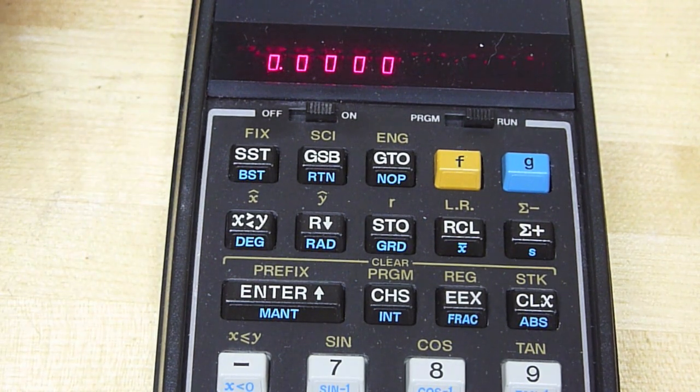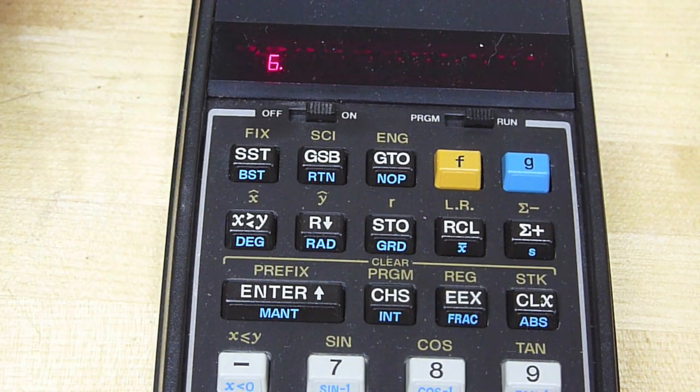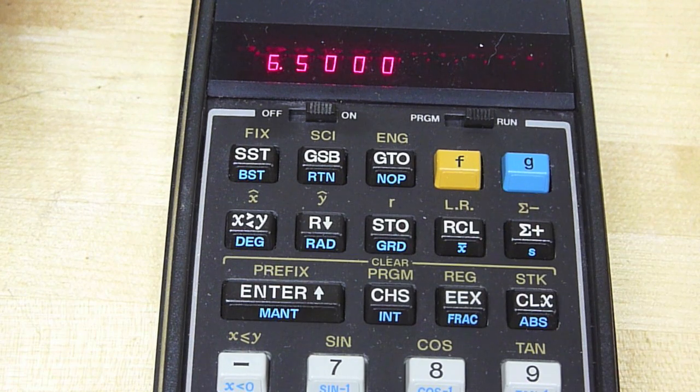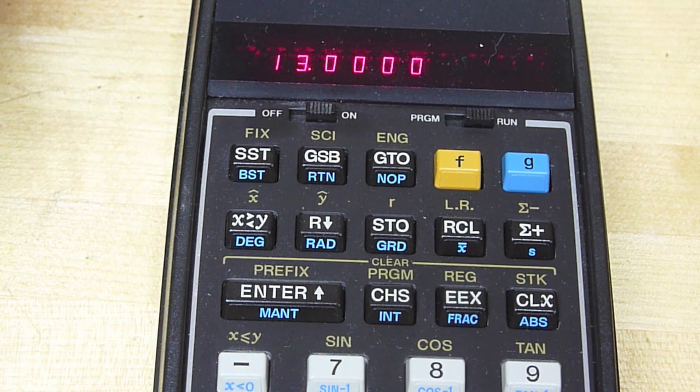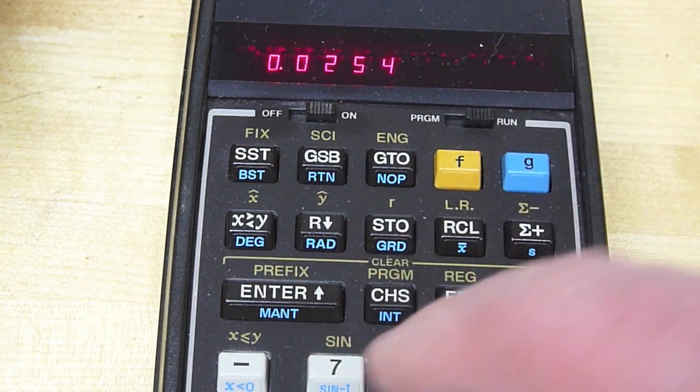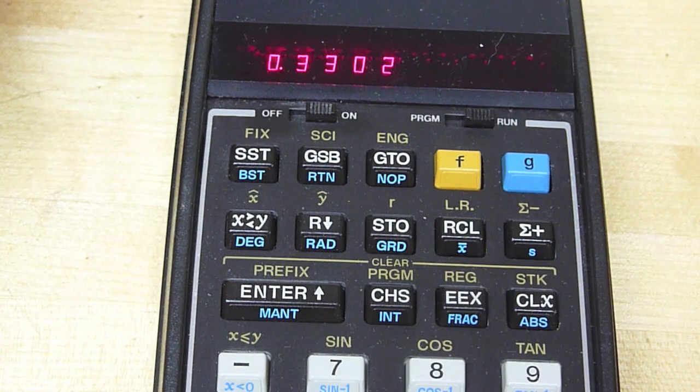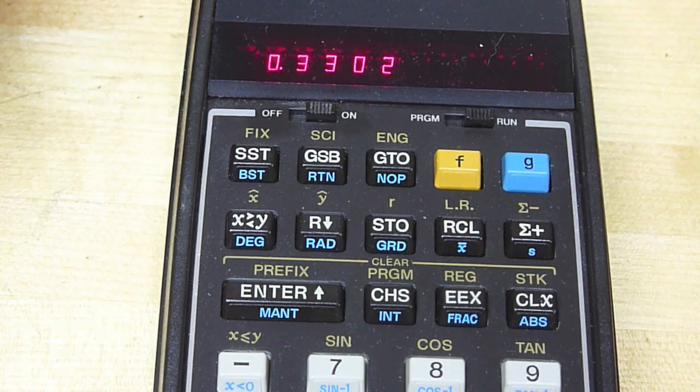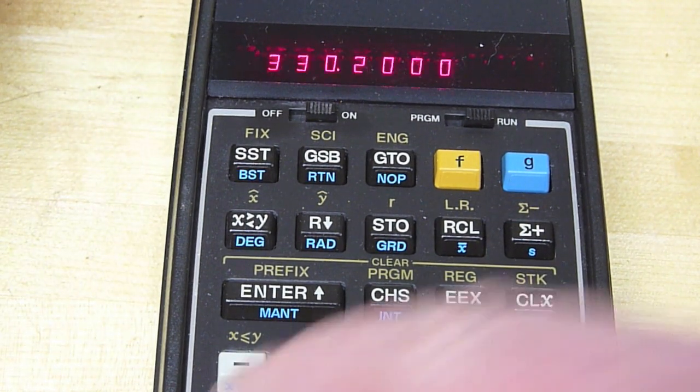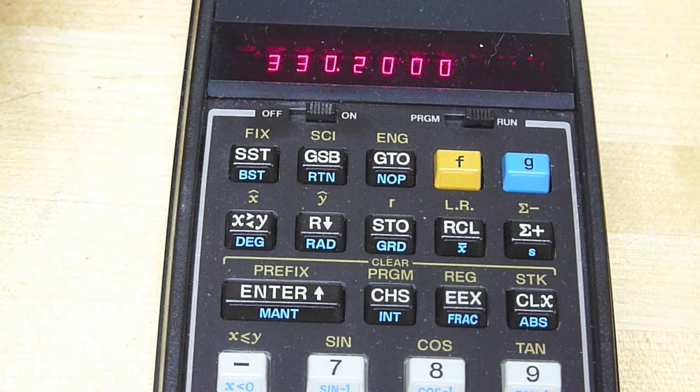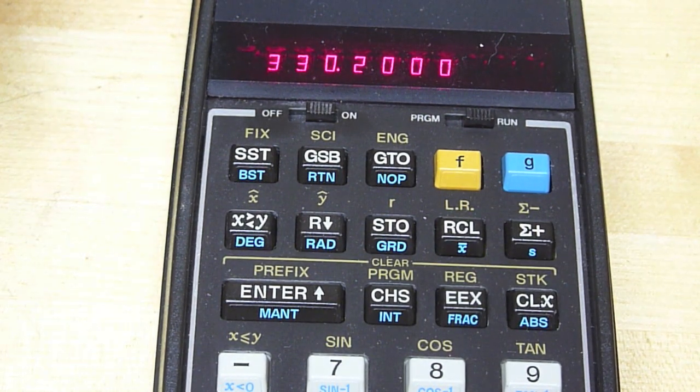So let's do the math. I found that the distance between the two nulls was 6.5 inches, more or less. So that means the wavelength at a kilohertz is 13 inches. Converting to meters, that's 0.33 meters. And the frequency was a kilohertz. So we get 330 meters per second for the speed of sound, which is pretty close to the actual value.